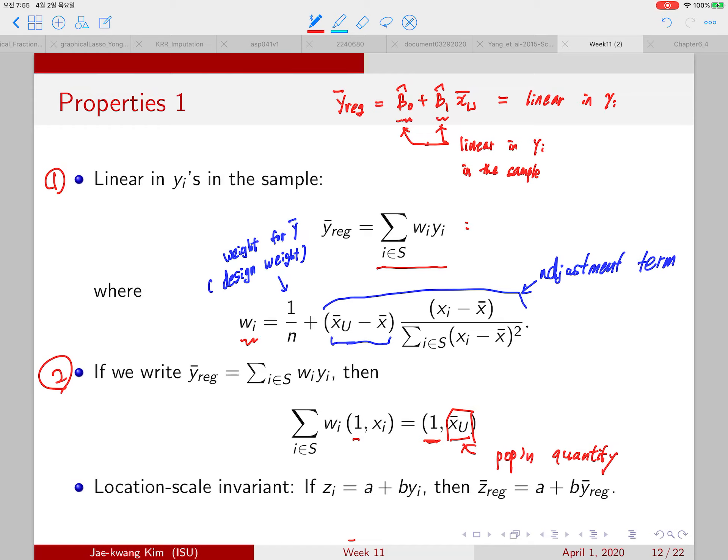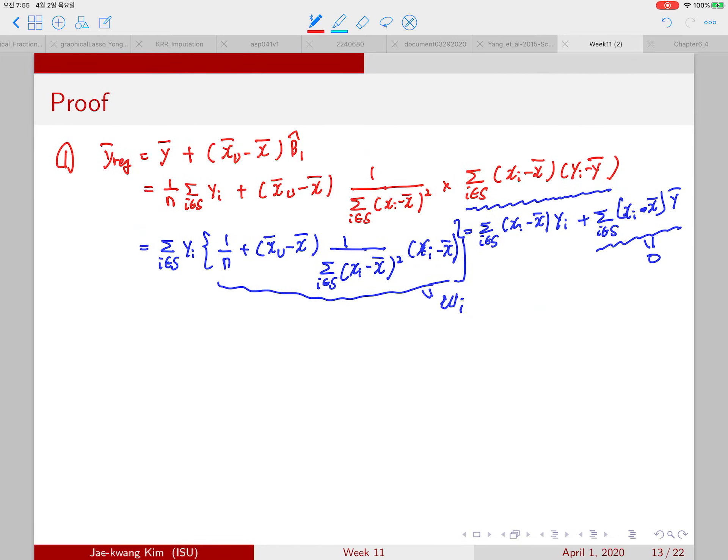So this is actually because of this weight add up to one, that means this is a weighted average. So now let's take a look at the second property. This is a weighted average.